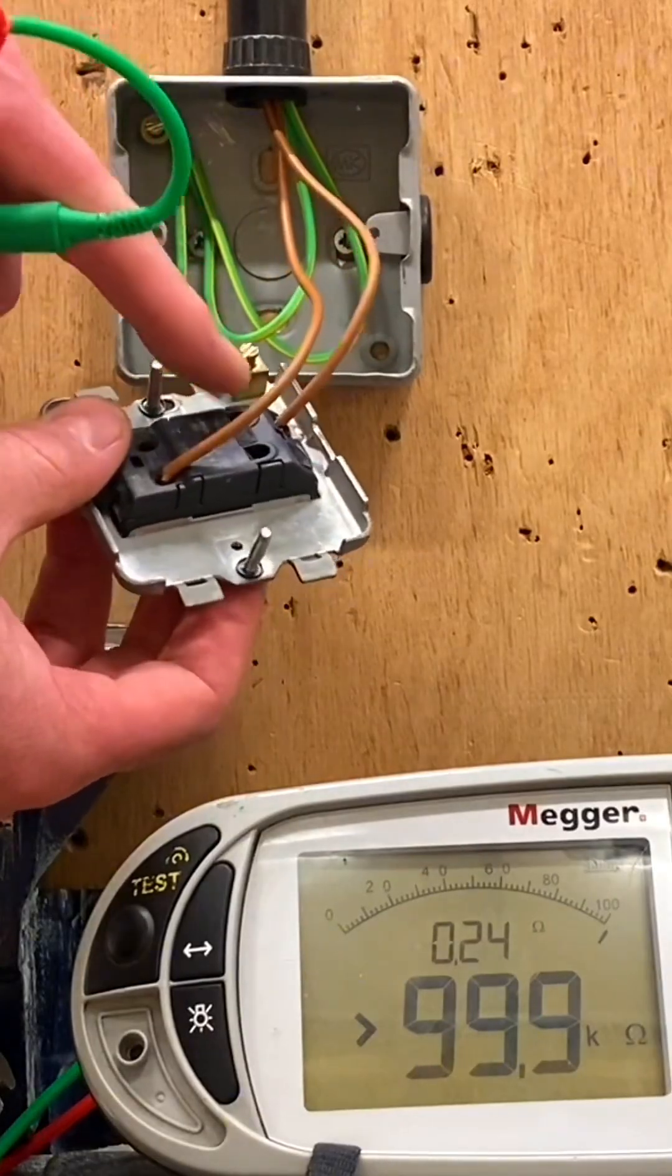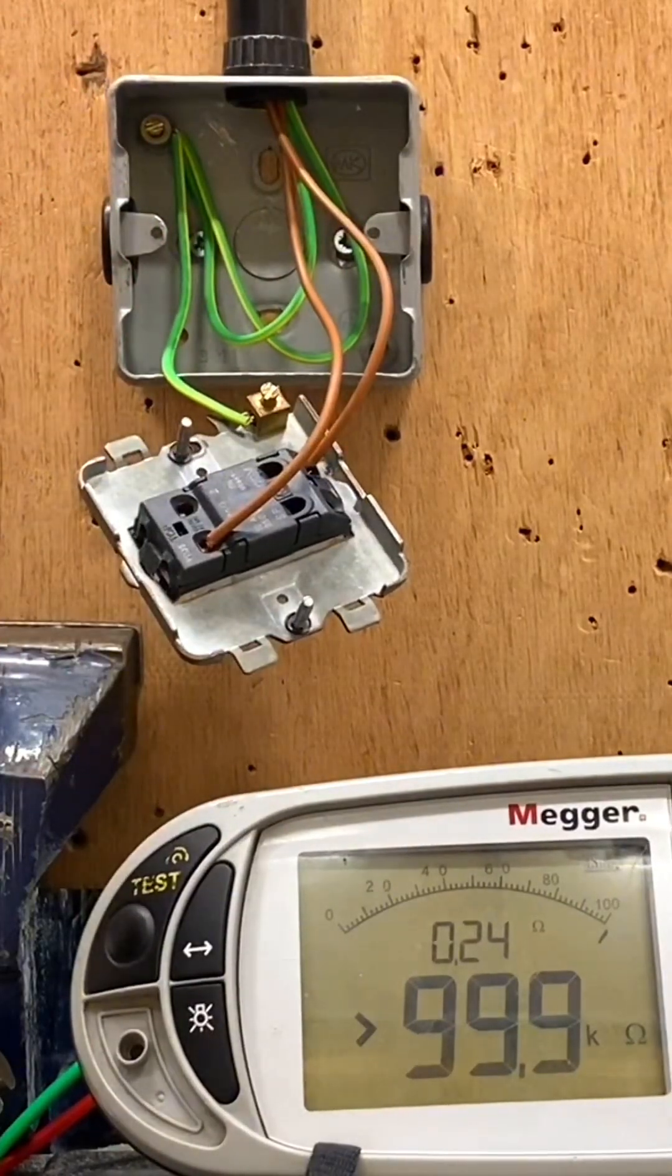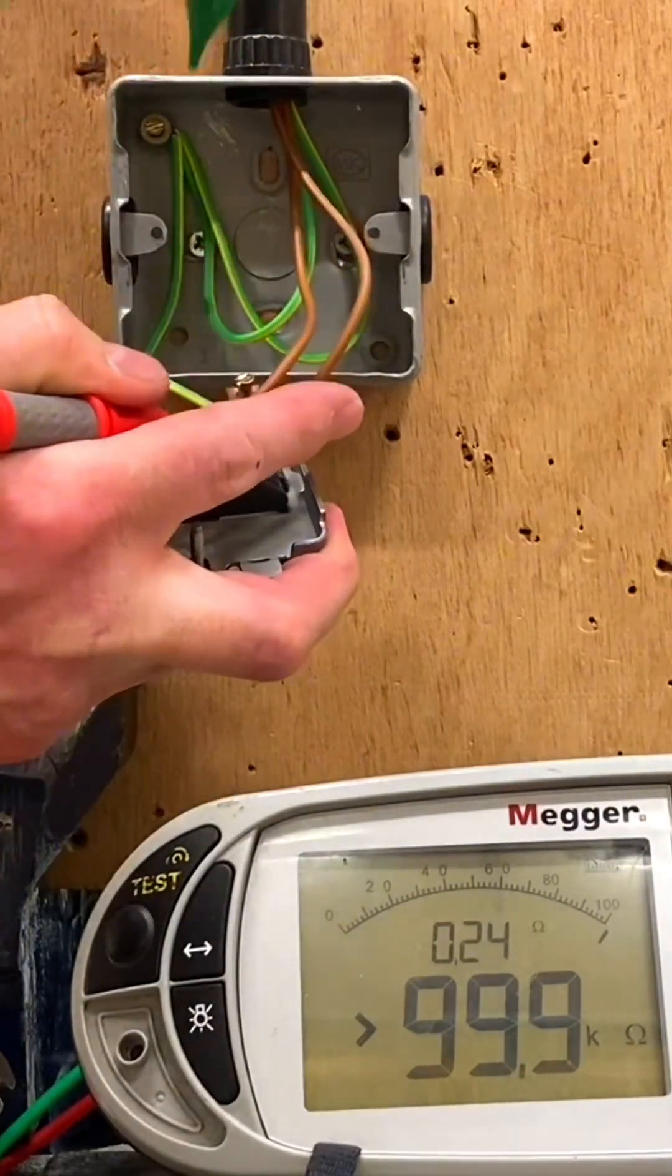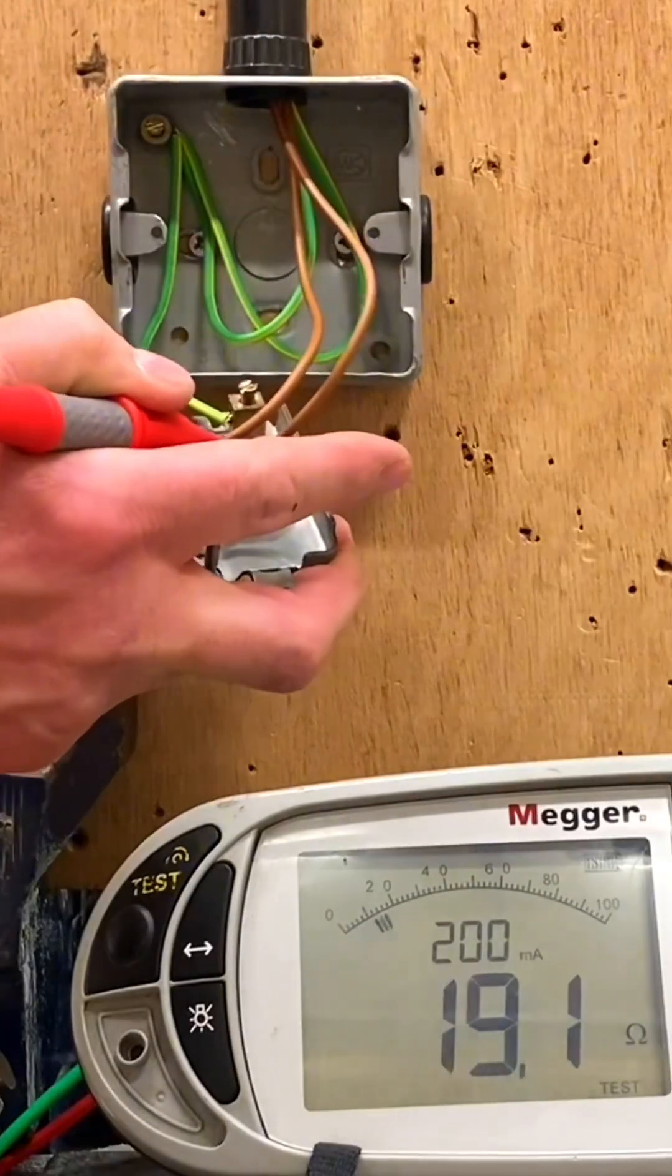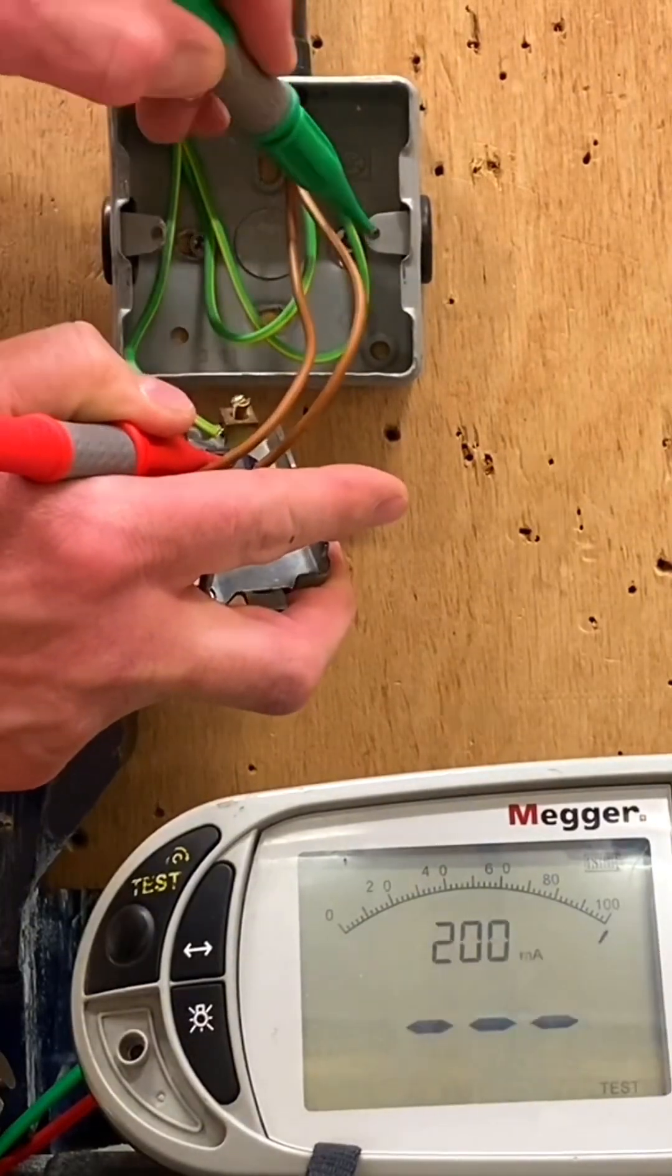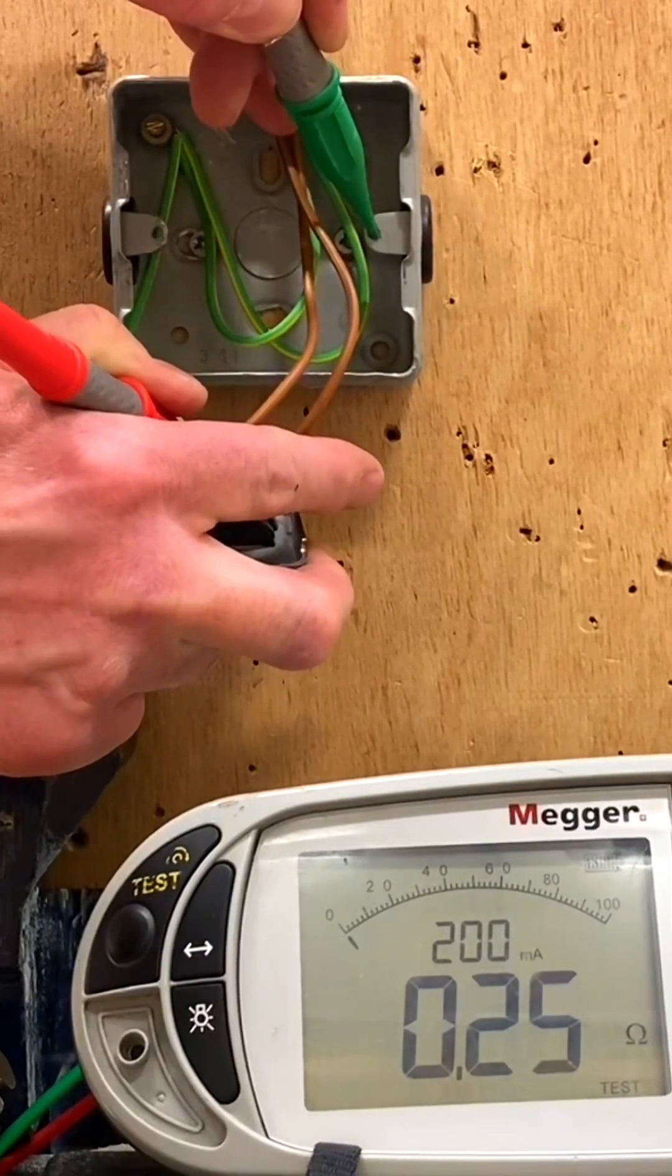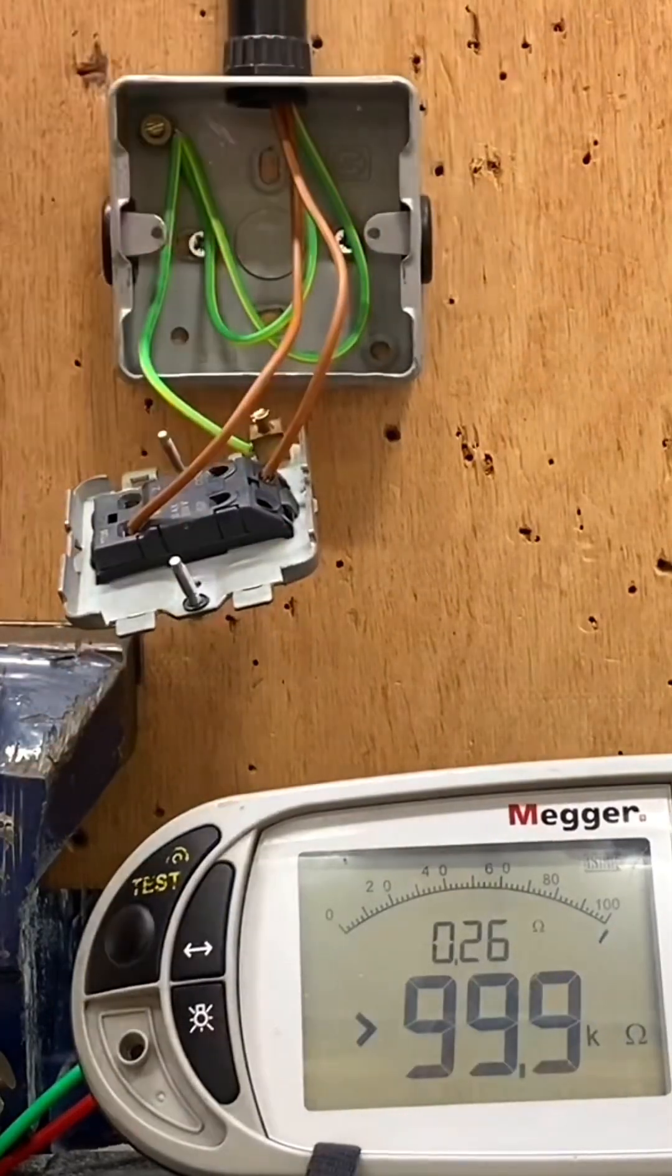Now going to the common of the back box - common here and into the back box, it's gone to the earth terminal, reading of 0.24. Then we're going to the threaded area of the screw and we get 0.24 again, 0.25 as it settles down. We've got to remember the highest reading there, so I got 0.25 of an ohm.